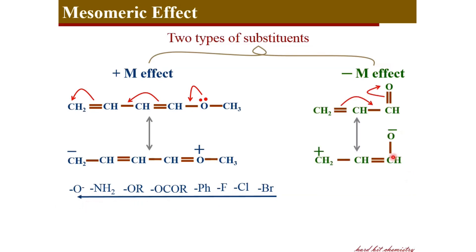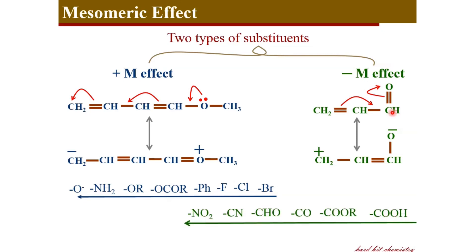Coming to minus M effect — in this aldehyde, the oxygen atom causes the delocalization of pi electrons towards it. That will be a minus M effect, where the substituent or functional groups drag the pi electron cloud towards them. Some minus M-inducing groups are nitro group, cyano group, aldehyde, etc. Their inducing ability increases from acids to nitro group in this direction among those examples.